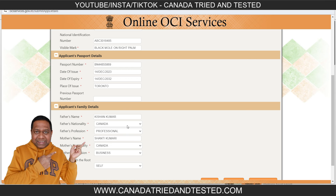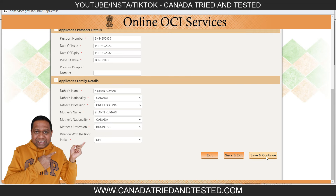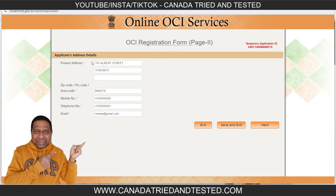For the applicant's family detail — father and mother's details and nationality — it may be that you have all acquired citizenship recently and are going through the process together as a family. Select the current nationality and profession for both parents. When it comes to relationship with the root Indian, for a minor the selection will be 'self' because they were earlier Indian and recently took citizenship of another country. Then save and continue.